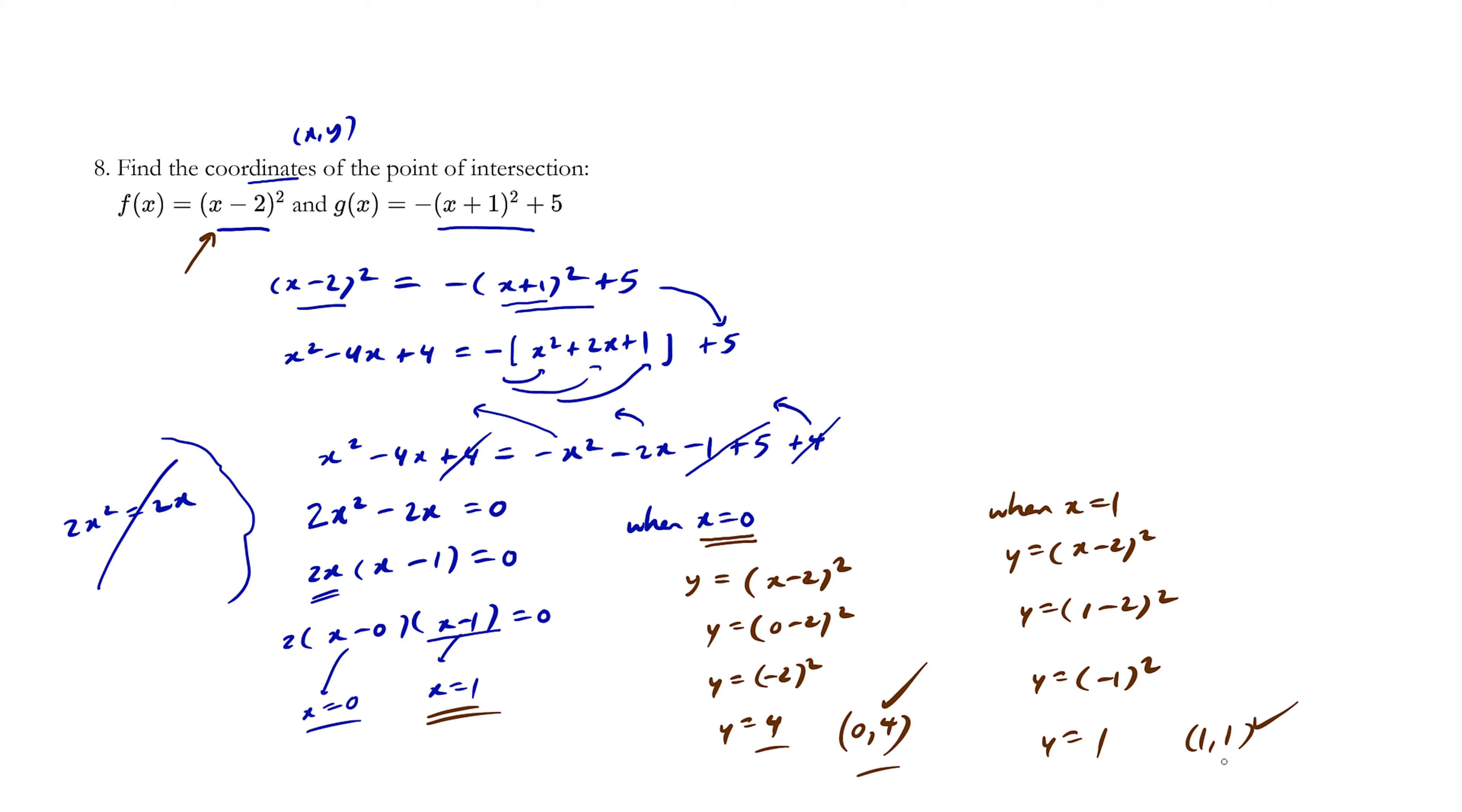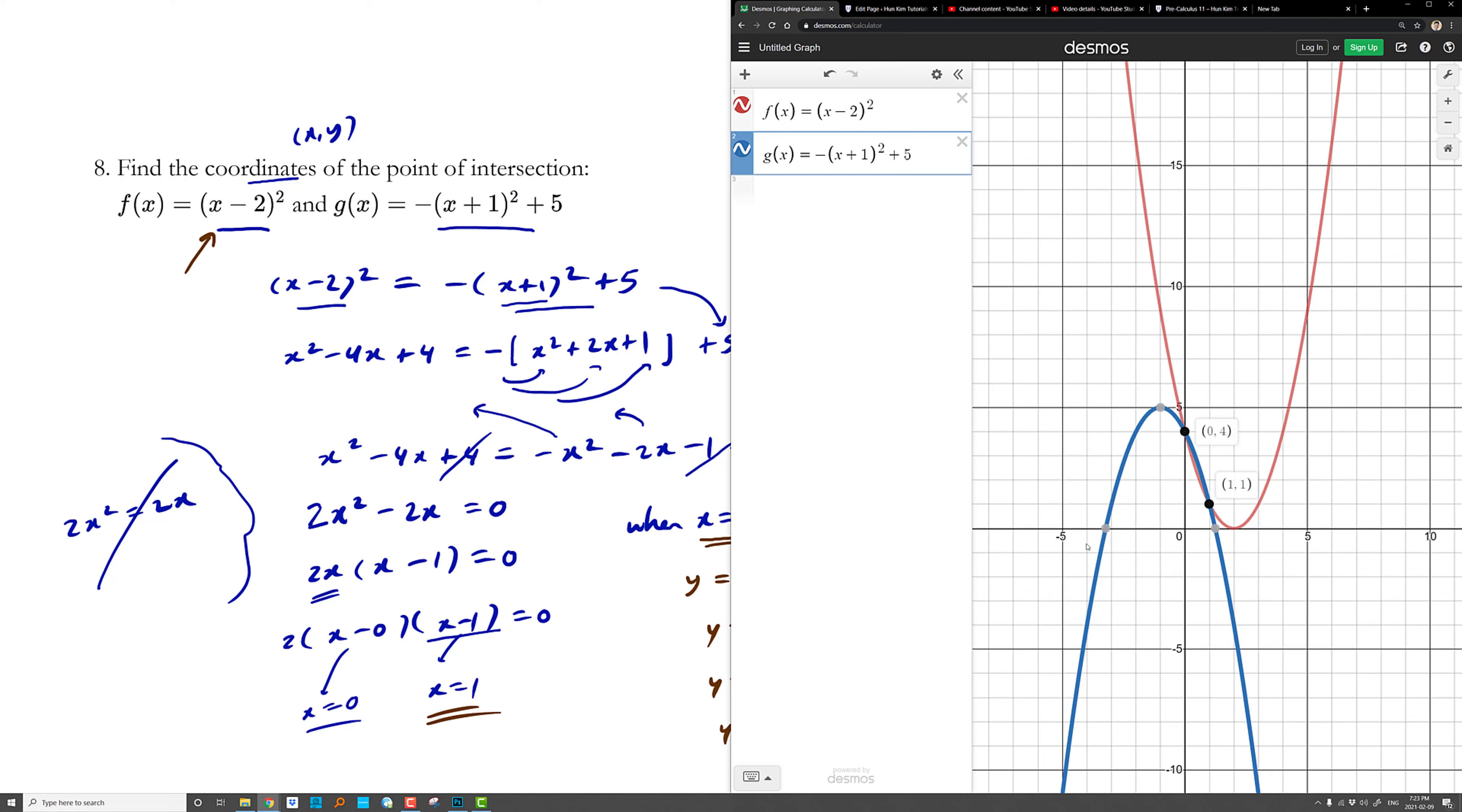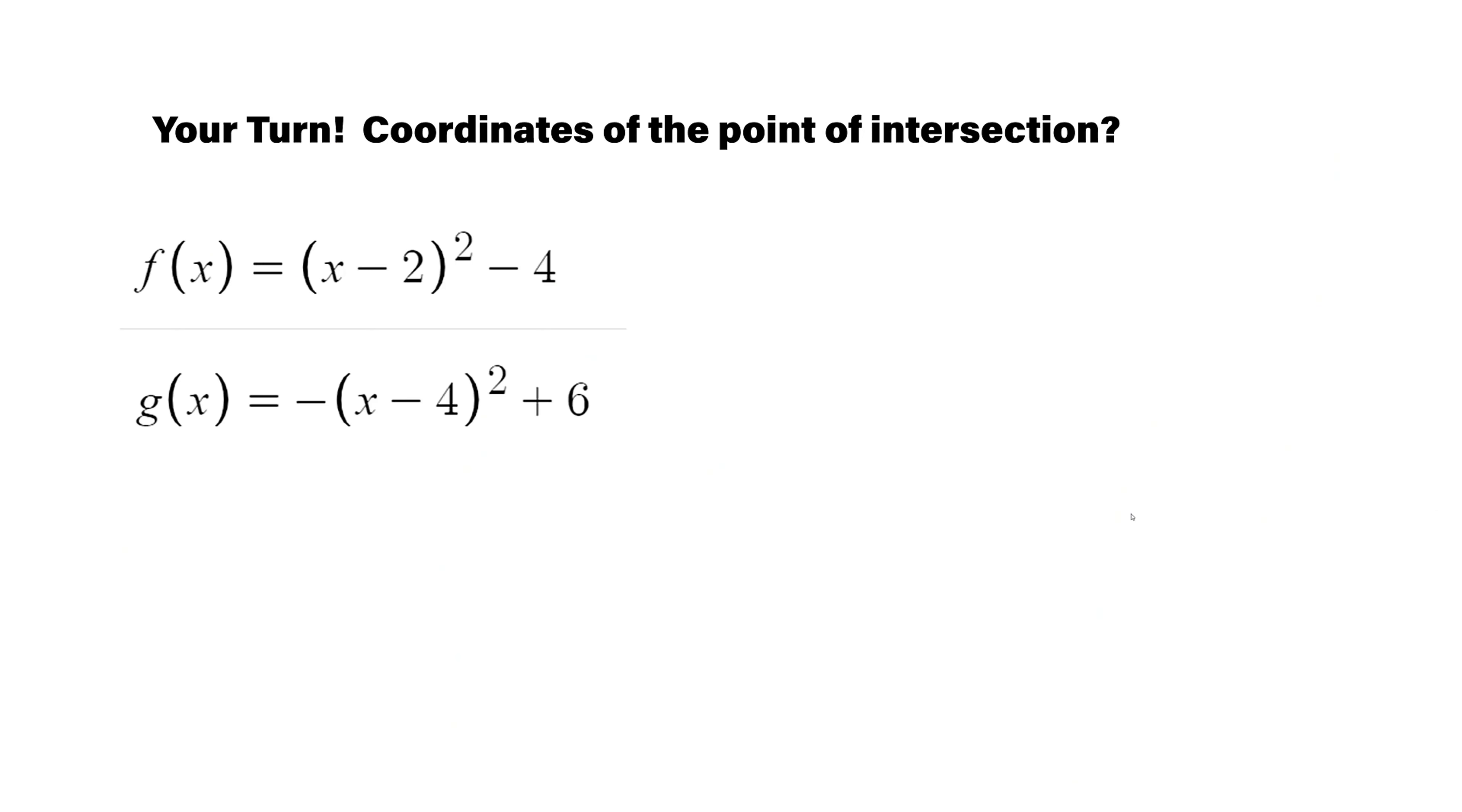So try to remember these. 0 comma 4, 1 comma 1. If you recall, that's exactly the points that we found. You found the coordinates, good job. Okay, now it's your turn. Find the coordinates of the point of intersection of these two functions.